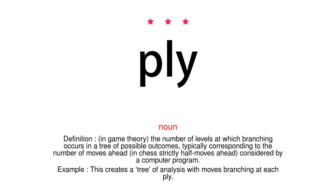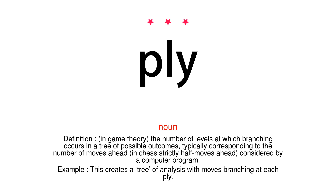Noun. Definition: in game theory, the number of levels at which branching occurs in a tree of possible outcomes, typically corresponding to the number of moves ahead — in chess, strictly half moves ahead — considered by a computer program. Example: this creates a tree of analysis with moves branching at each ply.